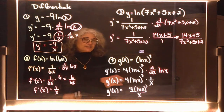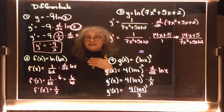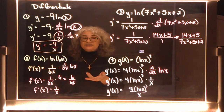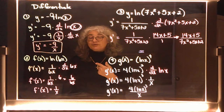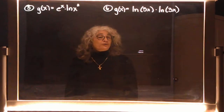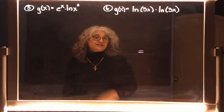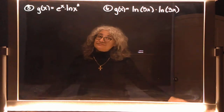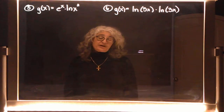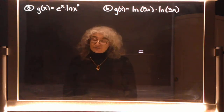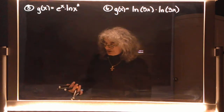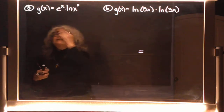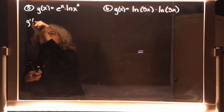If you need to rewind this part just to look at it again, that would be a good idea. Now let's look at example number 5 — it looks like I have a product, so I need to remember how to take the derivative of a product.